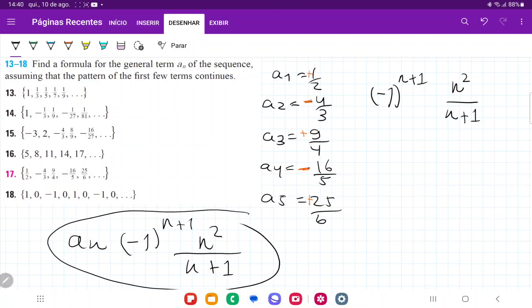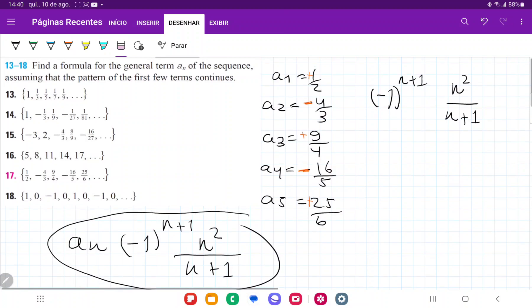This part accounts for the plus and minuses that keep changing. The (n+1) in the denominator accounts for 2, 3, 4, 5, 6. And the n² accounts for the numerator, which goes 1, 4, 9, 16, 25. This is the general formula.